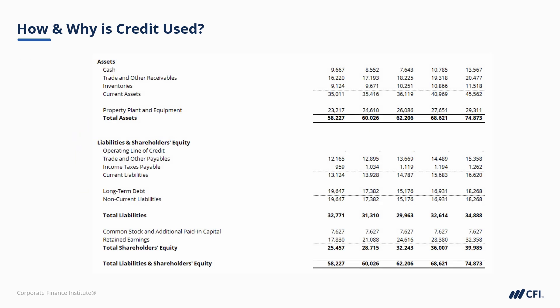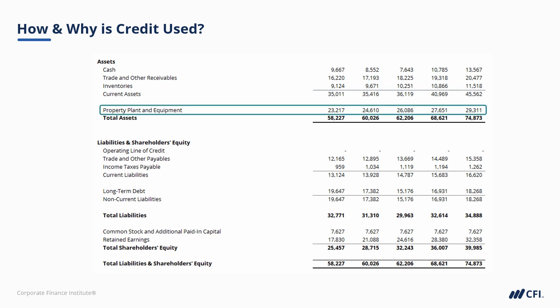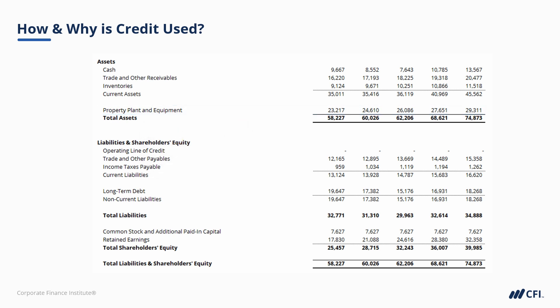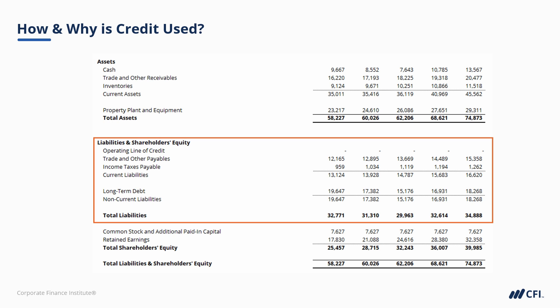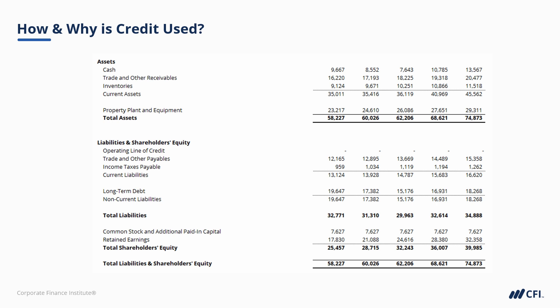Let's look at an example balance sheet. Management needs to purchase inventory to sell, and they must also invest in property, plant, and equipment to operate. This is known as CAPEX, which is short for Capital Expenditures — things like manufacturing equipment, commercial real estate, and so on. Without getting too far into accounting fundamentals, assets are things that a company owns and liabilities are things that a company owes. If you look at the liabilities section on the balance sheet, you'll see the two forms of credit we covered in the first lesson: trade credit, shown here as an account payable, as well as bank debt or loans, shown here as long-term debt. This means that the firm owes both its suppliers as well as its creditors.